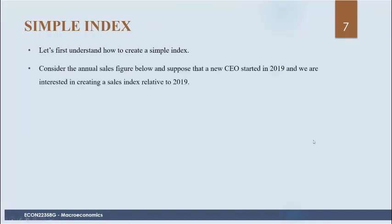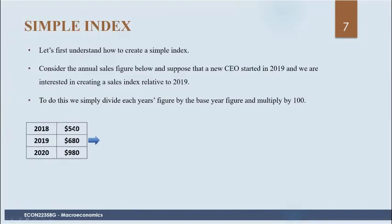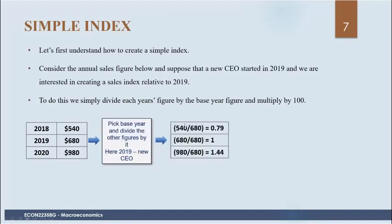We know in 2019 there was a new CEO, so let's dedicate 2019 as the base year and create an index. All we do is take each year's sales figure and divide it by the base year sales figure. So we take 540 divided by 680; the base year is always equal to 1, or 100 when multiplied by 100. For 2020, we take 980 divided by 680, then multiply by 100.